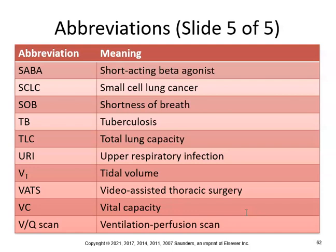SABA — short-acting beta agonist; SCLC — small cell lung cancer; SOB — shortness of breath; TB — tuberculosis. If diagnosed with TB, it's not the end of the world — you take about nine months to one year of the antibiotic INH. Make sure you don't get pregnant while taking TB drugs. TLC — total lung capacity, not tender loving care; URI — upper respiratory infection; VT — tidal volume; VATS — video-assisted thoracic surgery; VC — vital capacity; VQ scan — ventilation-perfusion scan.